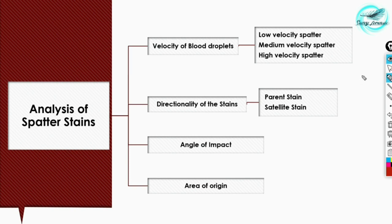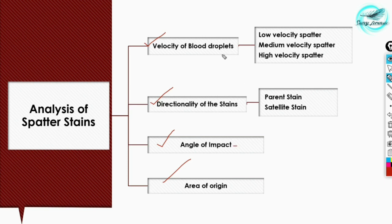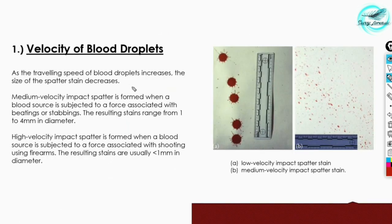The analysis of spatter stains can be done to find out the velocity of blood droplets, the directionality of stains — meaning from which direction the stains arrived — the angle of impact, and the area of origin from which the blood stain must have originated. The velocity of a blood droplet may be low, medium, or high. Let's understand this in the next slide.